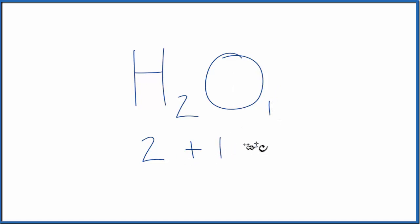Two plus one, that gives us three. So we have three total atoms in the H2O molecule.